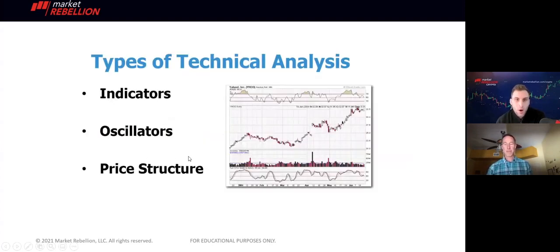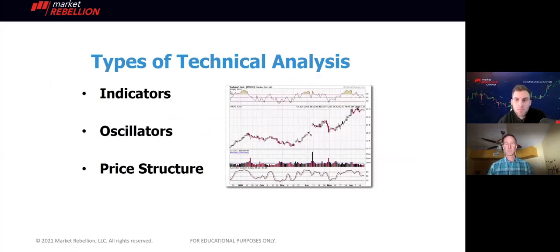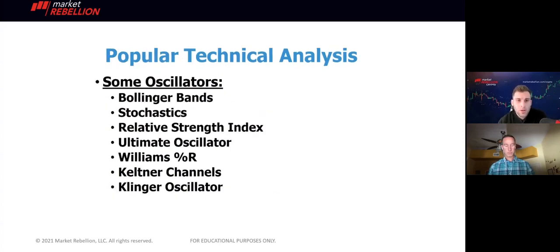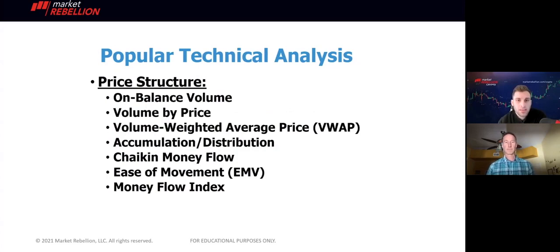There are other types of technical analysis. Before jumping into those, I just want to cover the trinity of technical analysis. It consists of price indicators — examples include moving averages, support and resistance lines, and candlesticks. It also consists of oscillators, which are momentum-based indicators — these include Bollinger Bands, the RSI, and Keltner Channels. And then we have price structure, which consists of things like on-balance volume, money flow, and the money flow index.